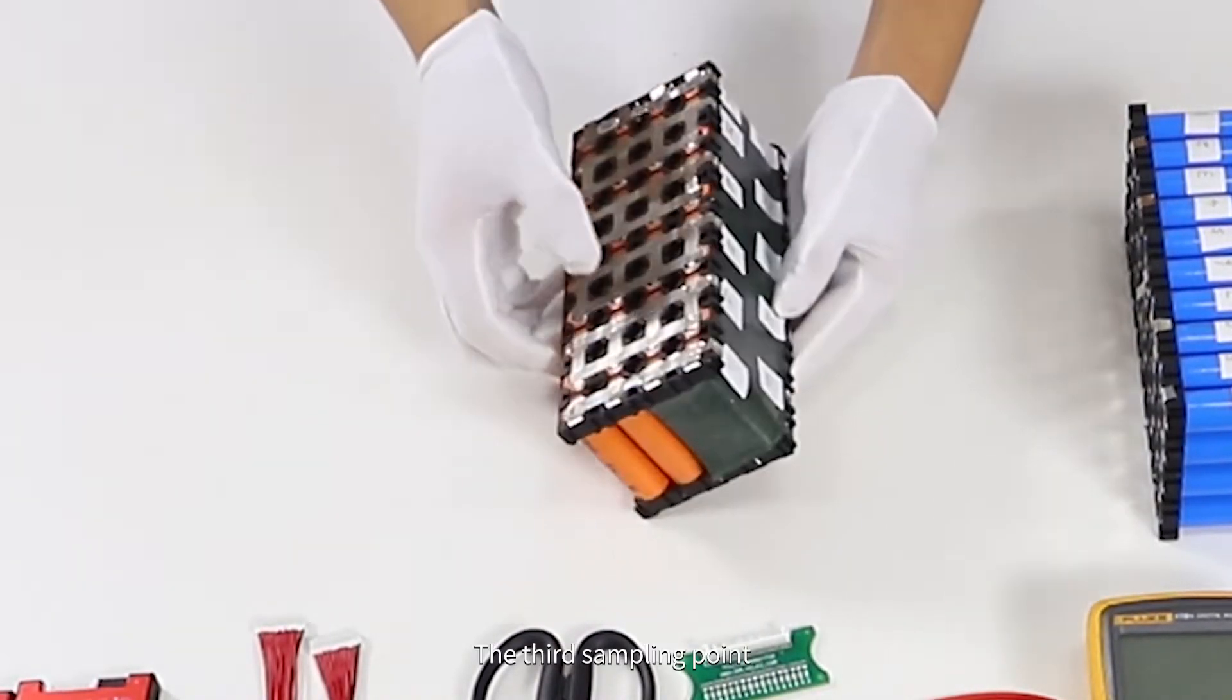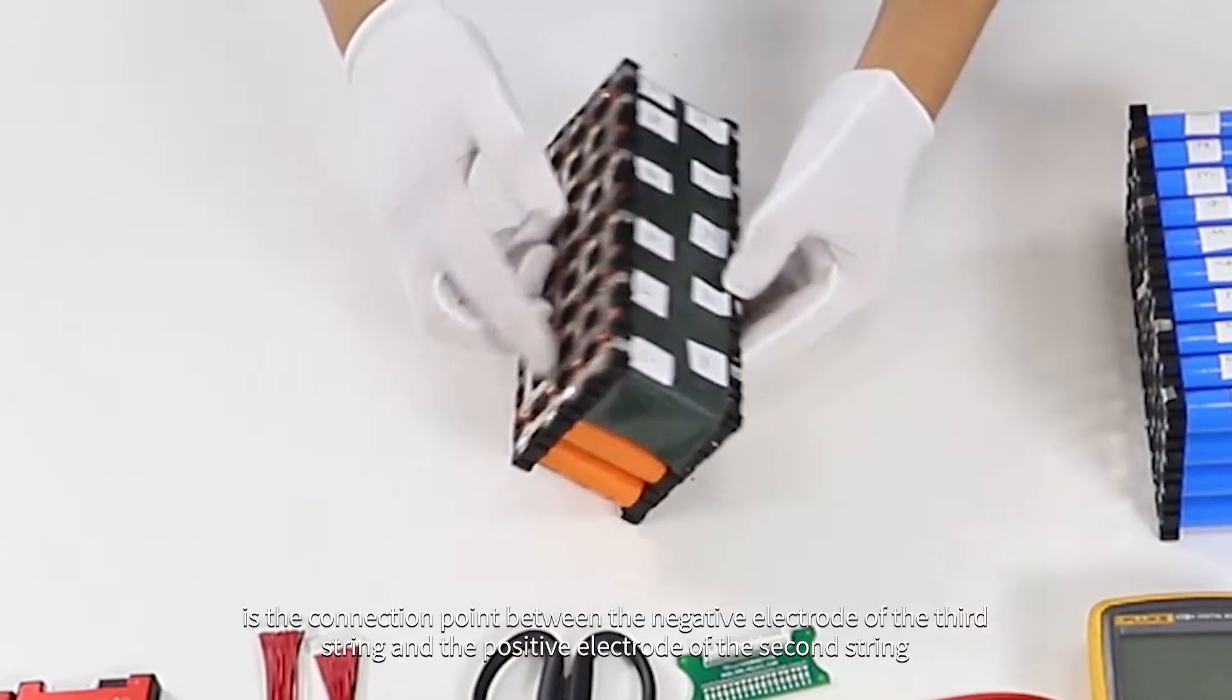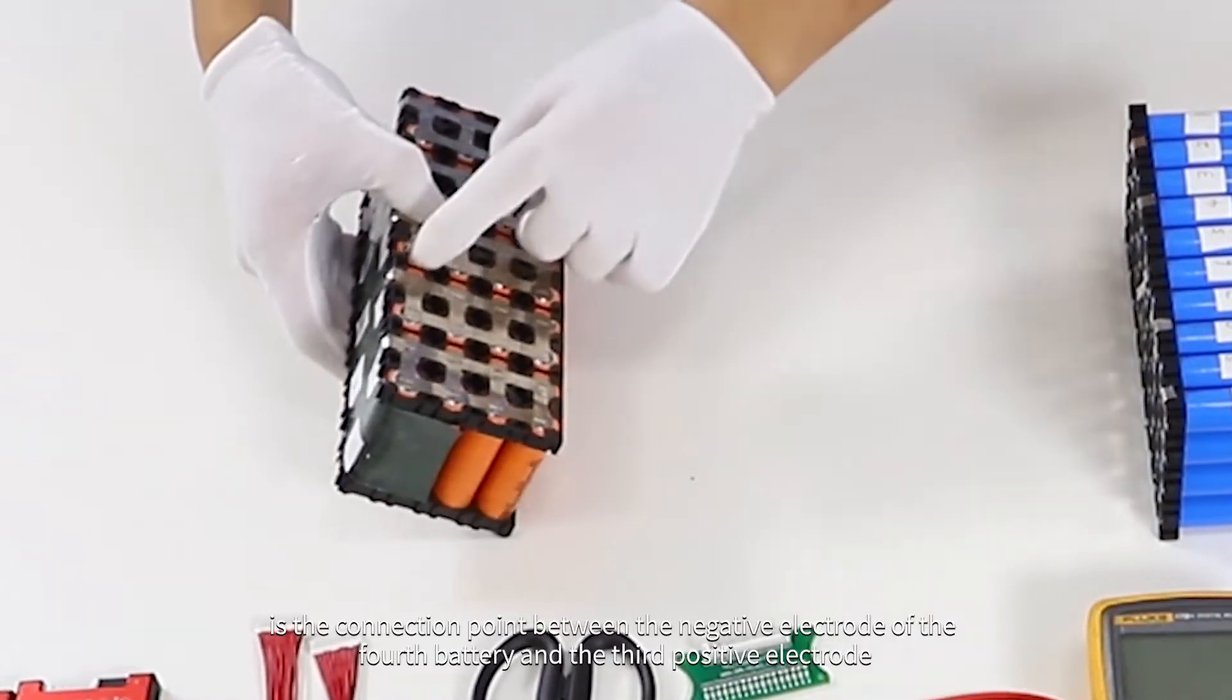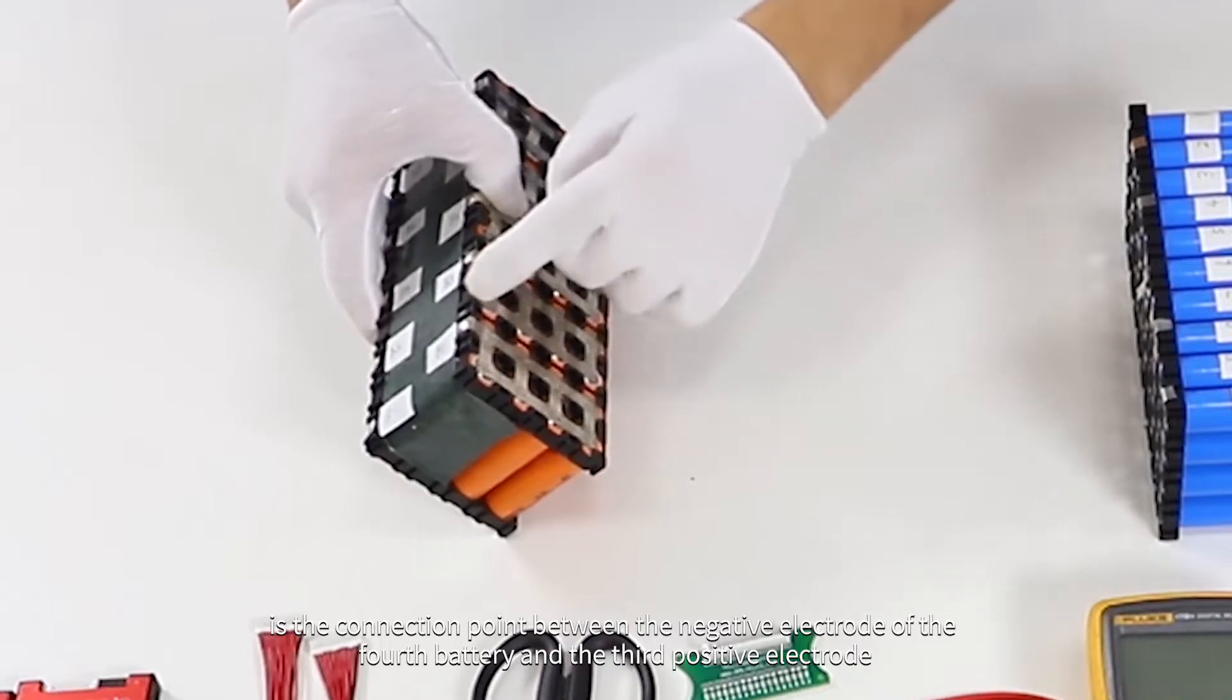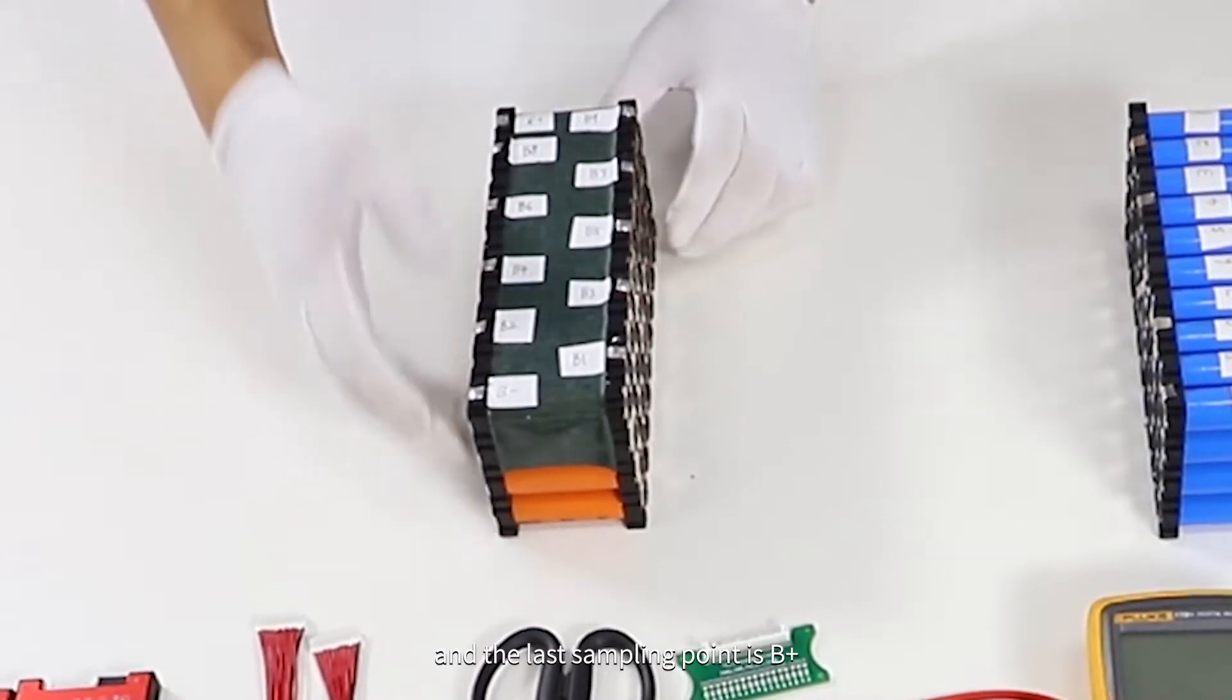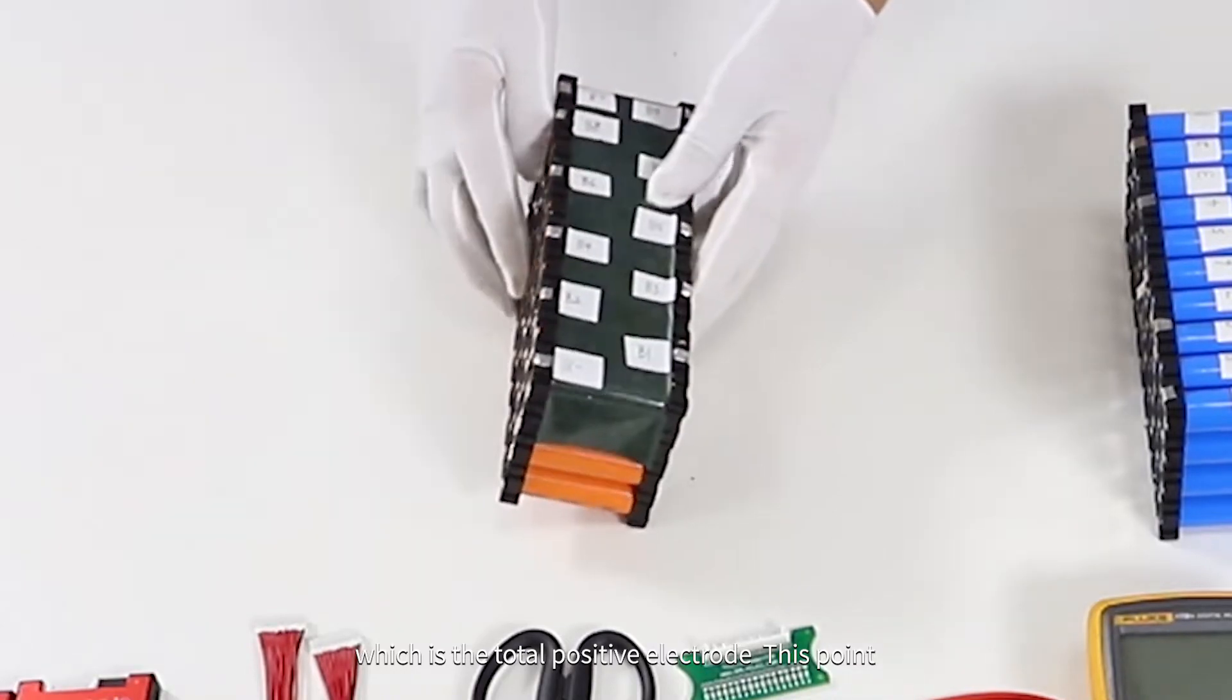The third sampling point is the connection point between the negative electrode of the third string and the positive electrode of the second string, marked as B2. The fourth sampling point is between the fourth battery negative and third positive, marked as B3. And so on, and the last sampling point is B+, which is the total positive electrode.